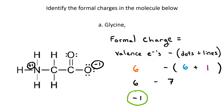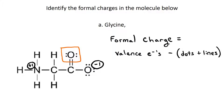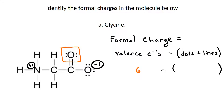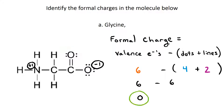How about the oxygen in the double bond? It's oxygen, so it's in group 6A and has six valence electrons. It has four dots around it and two lines. So the formula for formal charge gives us six minus six, or a zero charge on that oxygen.